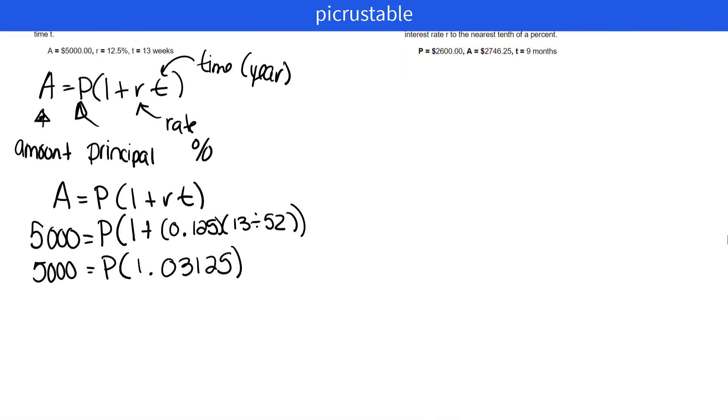Well, we want to know what P is. So what we're going to do now is we're going to just divide 1.03125 on both sides. And let's see what our principal has to be.